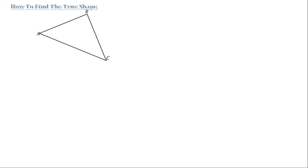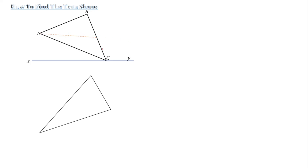To find the true length, you need to construct a constructional line from A to D — any point — that is perpendicular to BC. But first you need to introduce your XY plane. After you introduce the XY plane, you draw the constructional line, and here will be our D. This is the front view, and below is the plan.